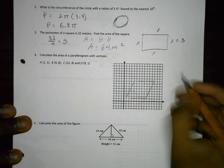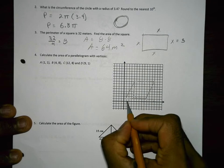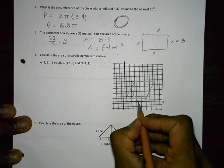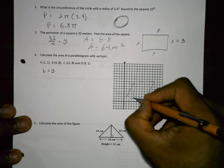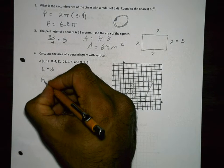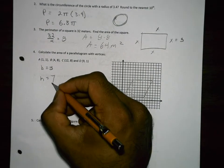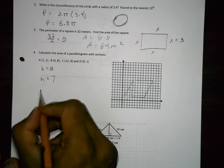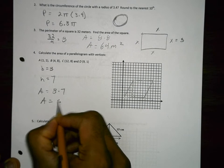And they want that area, so that's going to be base times height. There's my height. So my base is 8 and my height is 7. So plugging that into the formula, I'm going to say the area is equal to 8 times 7 and the area equals 56.